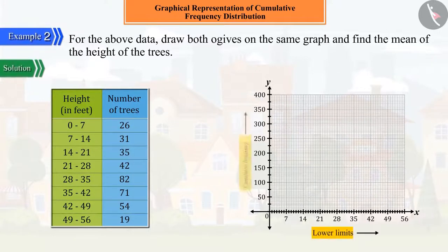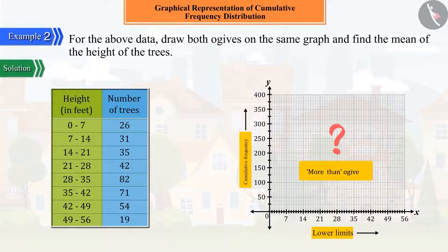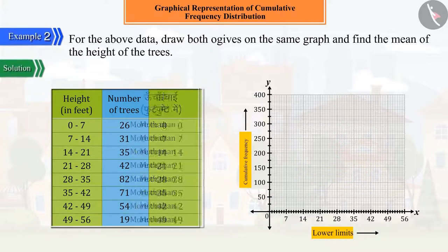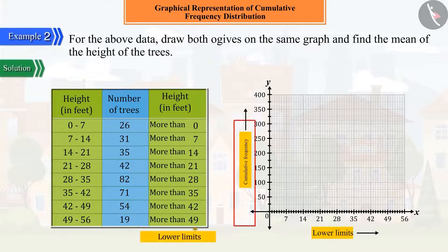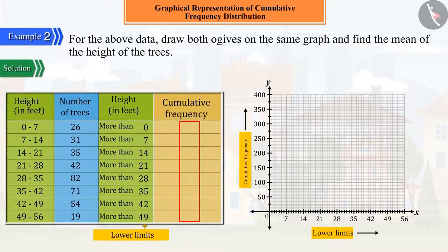Now, can you get the more-than type of ogive using the given distribution? For this, we will need to construct the more-than type of cumulative frequency distribution.